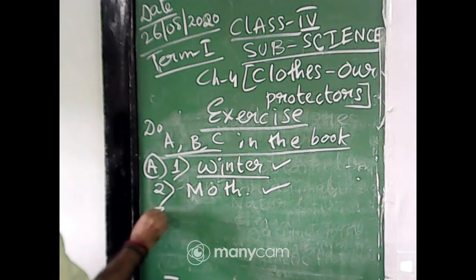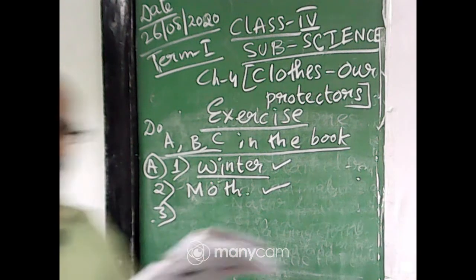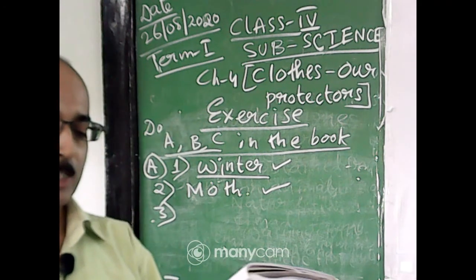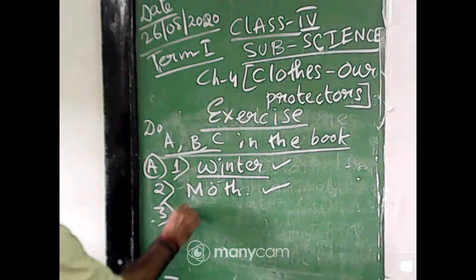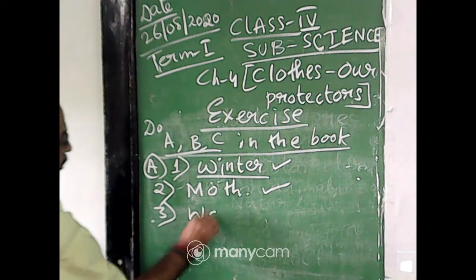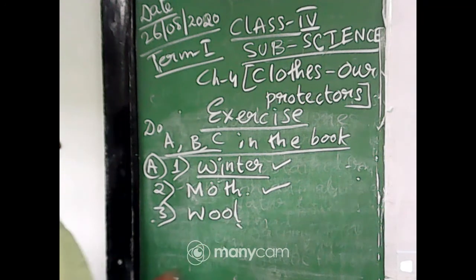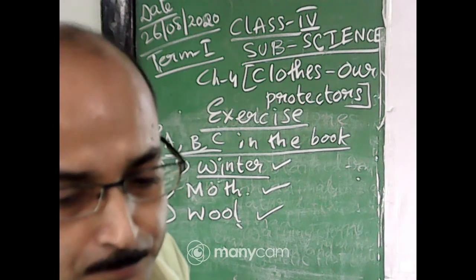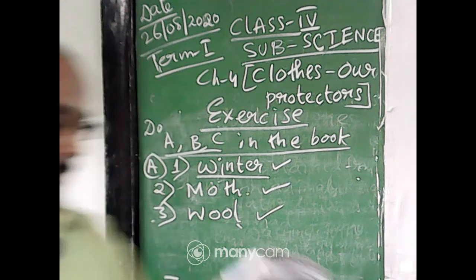Number three: which of the following is a natural fibre — wool, polyester, or nylon? The answer is wool. Wool is obtained from animals — we get it from sheep — so it is a natural fibre.